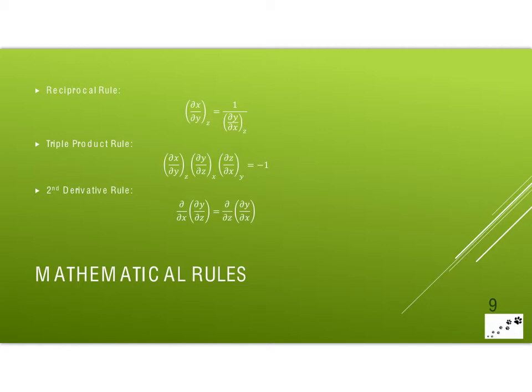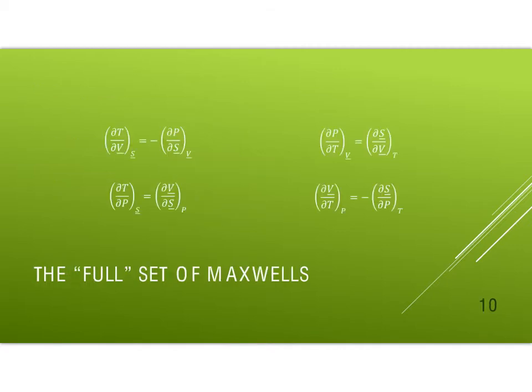In the previous lesson, we had developed these mathematical rules, and we have a reciprocal rule, a triple product rule, and a second derivative rule. We used the second derivative rule to develop Maxwell equations. The triple product rule and the reciprocal rule we haven't really used yet. So let's start looking at how that combines with our Maxwells. Now this is what most people consider the full set of Maxwells. These are written on an intensive basis for a pure substance. So we don't have to worry about the n. No change in number of moles in this case. And so this is what you would get if you looked at each of the energy functions, all four of them.